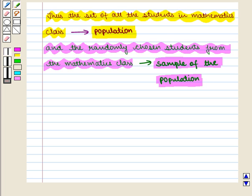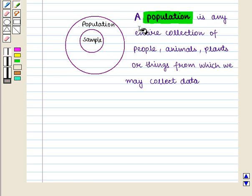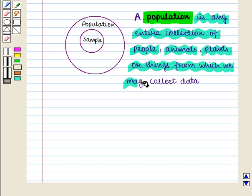We define a population as any entire collection of people, animals, plants or things from which we may collect data. It is the entire group we are interested in, which we wish to describe or draw conclusions about.